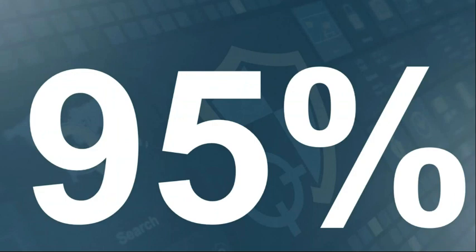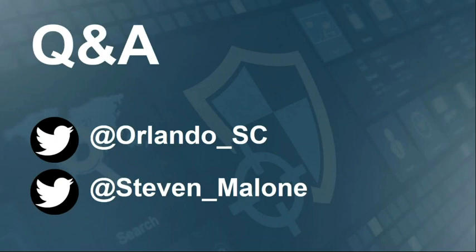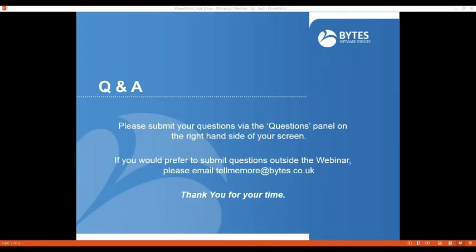Just to recap before we take questions: 95% of all data breaches in the last year started with a spear phishing or phishing email, and this will stay constant or increase because attackers will continue to modify their attack vectors and use email because it's an easy attack vector. The Mimecast Targeted Threat Protection Suite is designed to directly address all of the issues you see today and tomorrow in these kinds of attacks. Thank you very much — we'll pass back to Amy for some questions.